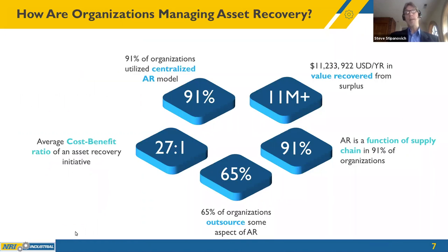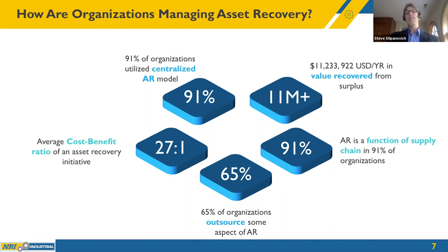Here's a summary of an asset recovery benchmark study done by the CAPS Research Group, looking at about 40 enterprise organizations ranging from utilities to food processing to manufacturing. For every dollar spent on asset recovery initiatives, there is a 27-times return. 91% of organizations utilize a centralized asset recovery model, where all operations are handled from one group or location. The average value recovered across all 40 organizations is $11 million-plus per year.